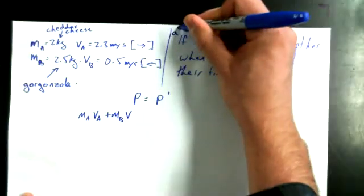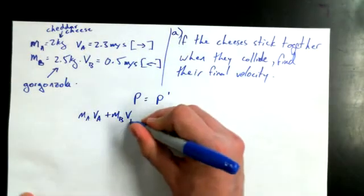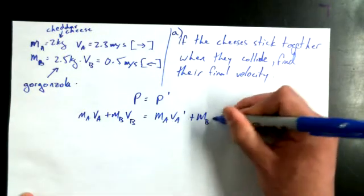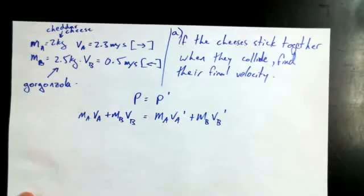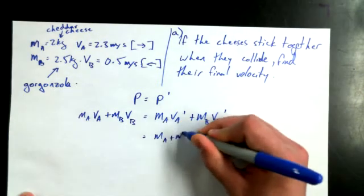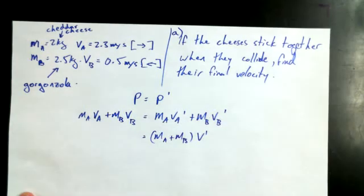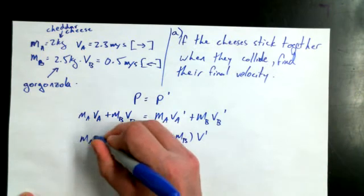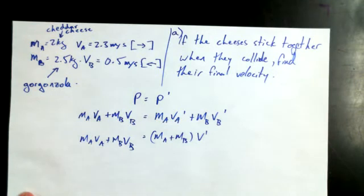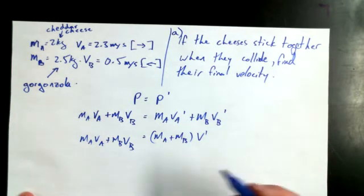And I can say MA VA plus MB VB. Sorry, I should call this part A of the problem. MB VB is equal to MA VA primed plus MB VB primed. Now if these guys stick together, what could I do to simplify the right hand side here? MA plus MB in brackets times V. Yeah. MA plus MB times just V primed. And I want to find the final velocity of the cheddar gorgonzola system. So what do I have to do next? Divide. Divide by the binomial.